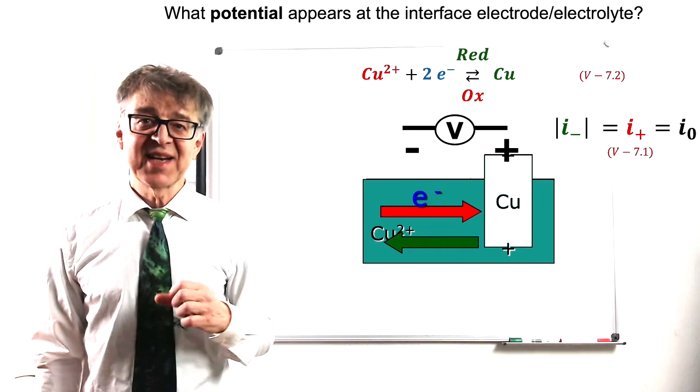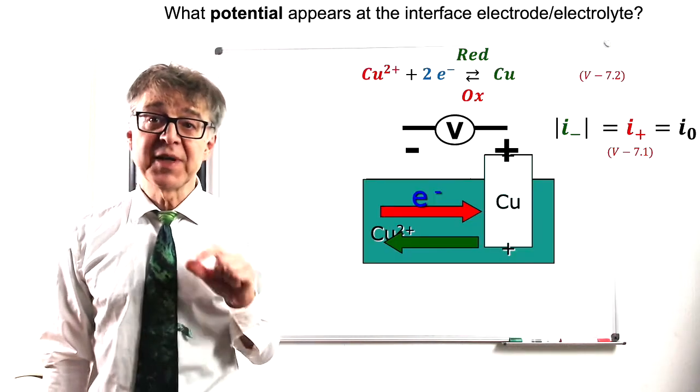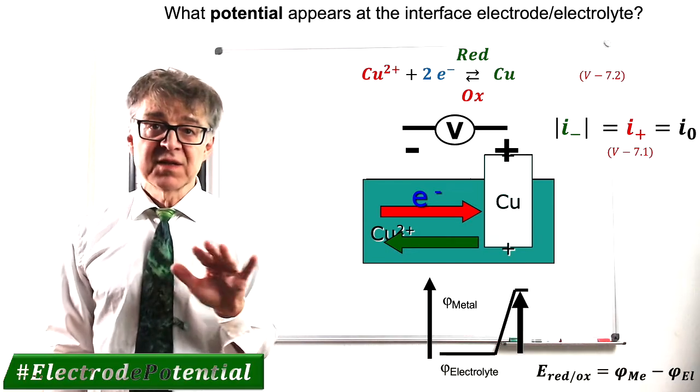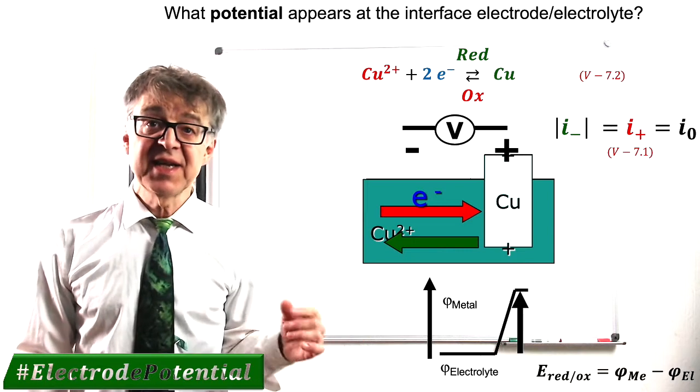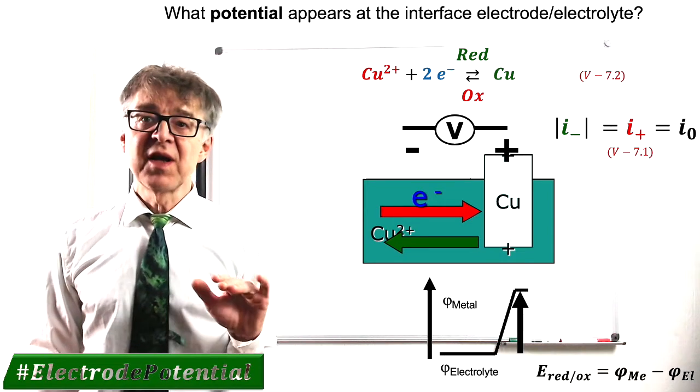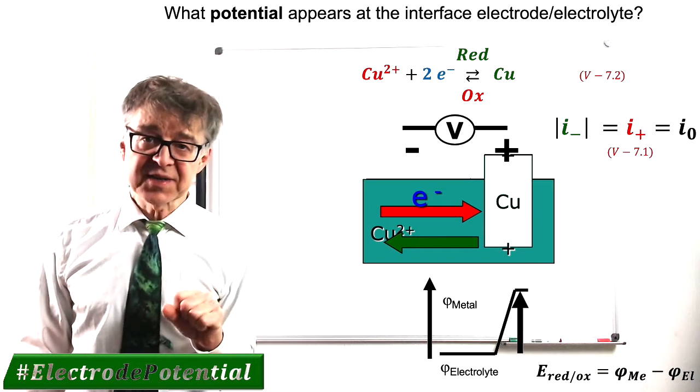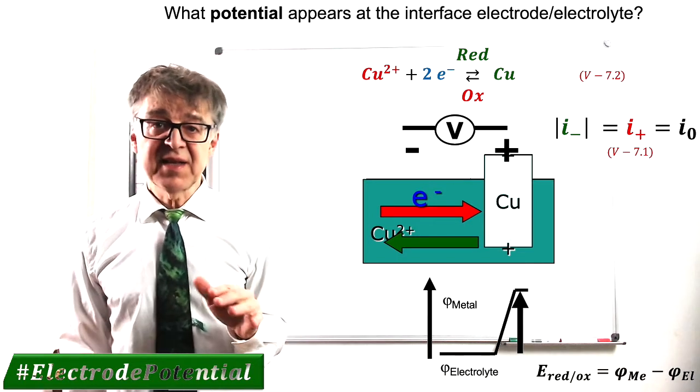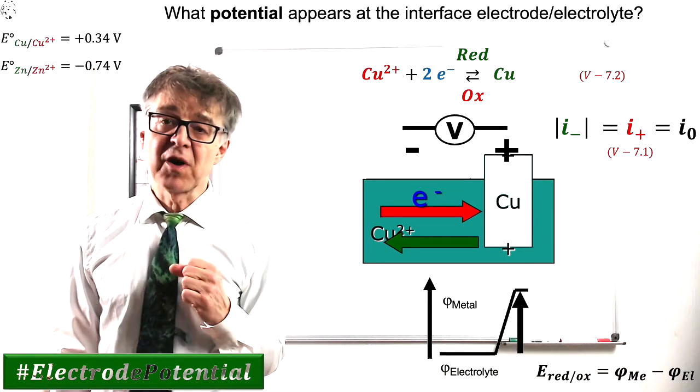As in any dynamic equilibrium, forward and reverse reaction, anodic and cathodic current will be equal. The difference in electrical potential between metal and electrolyte in equilibrium is called the individual electrode potential E sub redox. In standard state, the potential of the copper electrode is 0.34 volts.